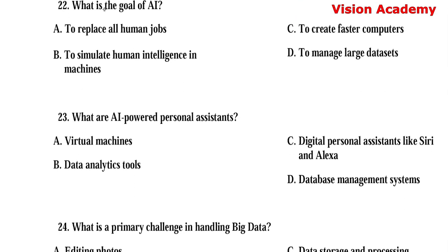Question number 22. What is the goal of AI? Option A: To replace all human jobs. Option B: To simulate human intelligence in machines. Option C: To create faster computers. Option D: To manage large data sets. Here, option B, to simulate human intelligence in machines, is the right answer.